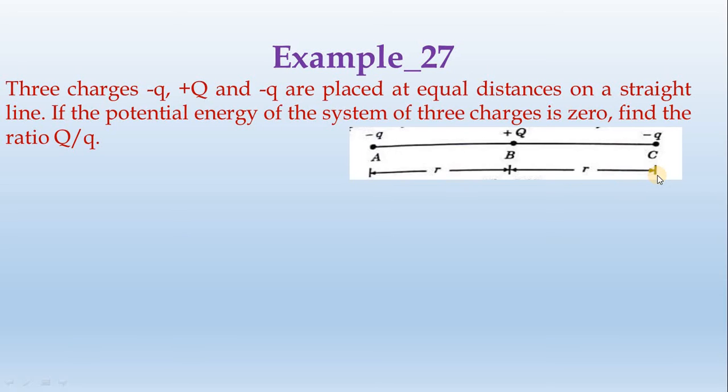What we have to do is set the potential energy to zero. The interactions between the two charges are: minus q and plus Q, plus Q and minus q, then minus q and minus q. This equals zero. This is the ratio.